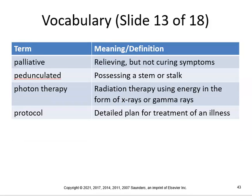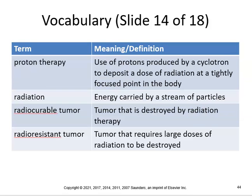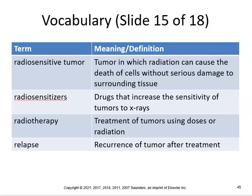Palliative means relieving but not curing symptoms — know that. Pedunculated means possessing a stem or stalk. Photon therapy is radiation therapy using energy in the form of x-rays. Protocol is a detailed plan for treatment of any illness — many things in medicine have protocols. Proton therapy uses protons produced by a cyclotron to deposit radiation at a tightly focused point. Radiation is energy carried by a beam of particles. Radiocurable means a tumor destroyed by radiation. Radio-resistant means a tumor requiring large doses of radiation. Radiosensitive means radiation can kill cells without serious damage to surrounding tissues.